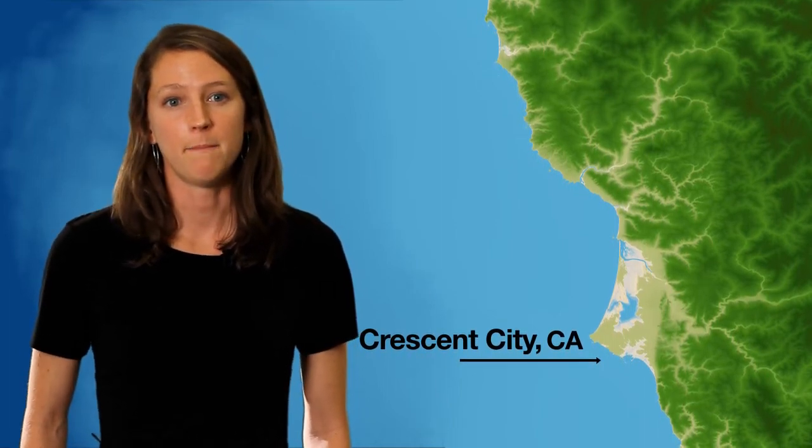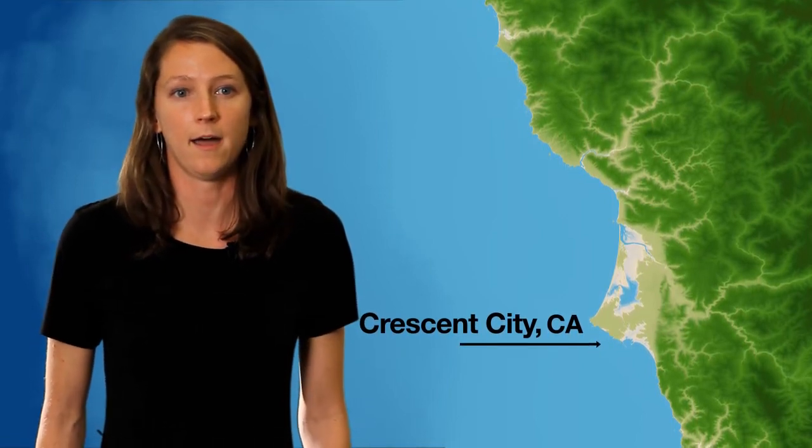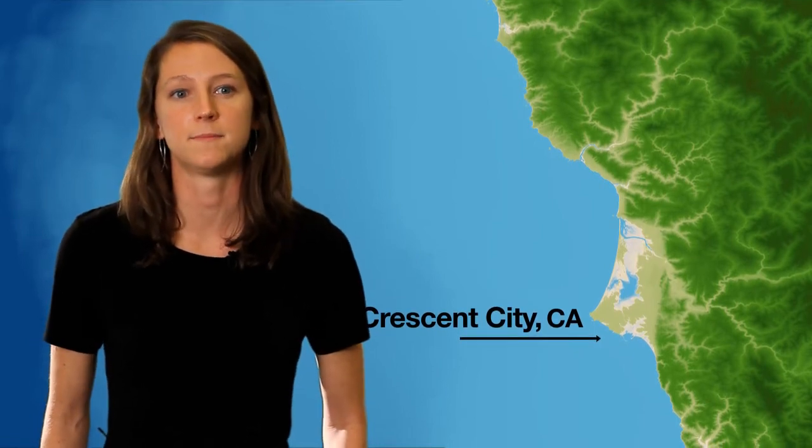Topographic data is elevation data of land, and bathymetric data is the elevation data for underneath the ocean surface. And because we can't see that because of the ocean and the water, we have to use other techniques to gather that elevation — or what we call bathymetry — such as sonar from ships.